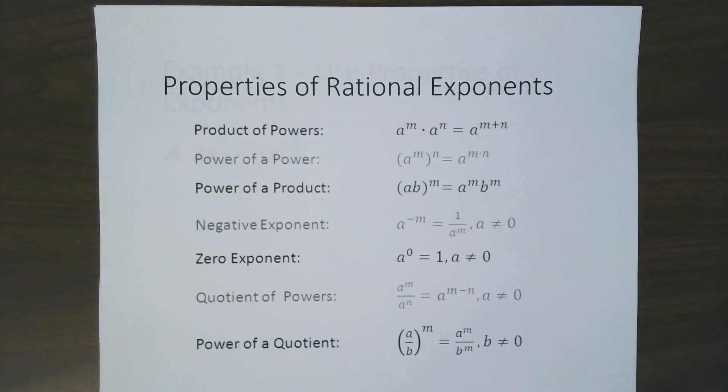This all starts with the properties of regular rational exponents. In general, you've got the product of powers, which means when you multiply, you add. Power of a power: when you raise to a power, you multiply the exponents. And the power of a product, you just distribute.